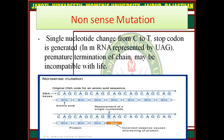Nonsense mutation: a single nucleotide change from C to T generates a stop codon in messenger RNA, represented by UAG. This leads to premature termination of the chain, which may be incomplete and incompatible with life. For example, in codon CAG, C is replaced by T, and in the messenger RNA it will be represented as UAG — a stop codon — causing the translation process to be terminated prematurely.